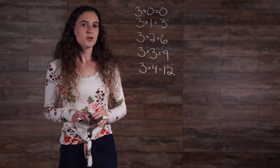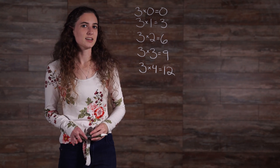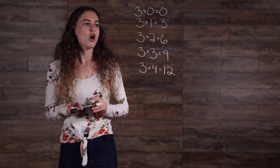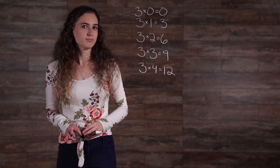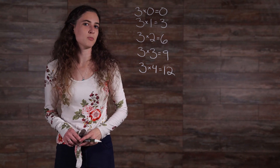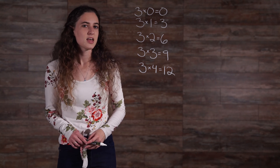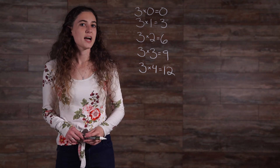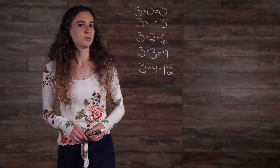The numbers 0, 3, 6, 9, and 12 are all multiples of 3. In order to obtain them, 3 is being multiplied by another number. Any number has an infinite amount of multiples.